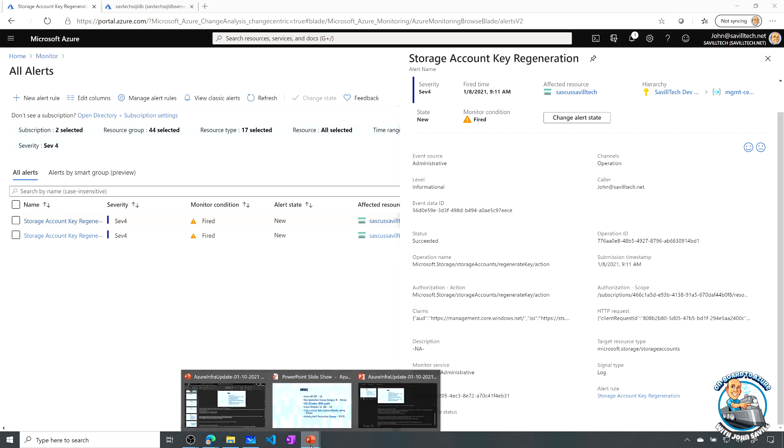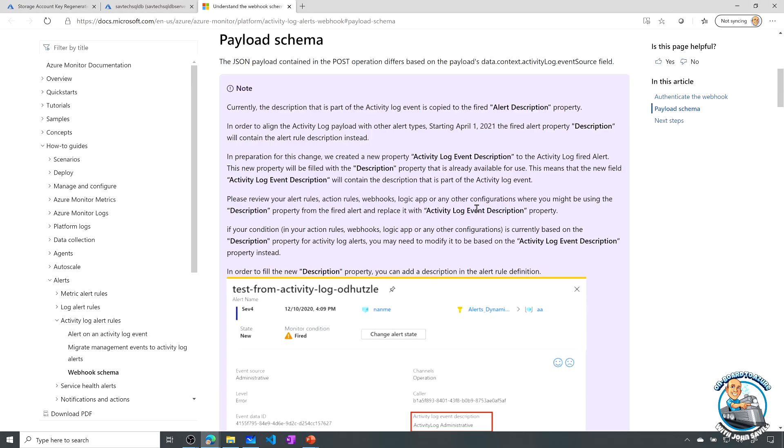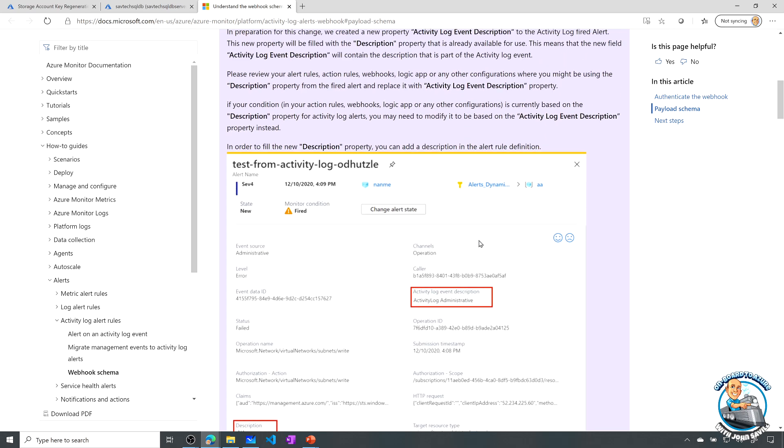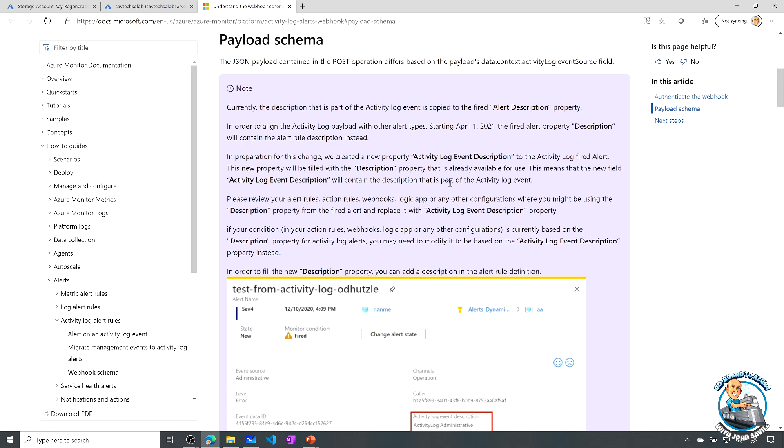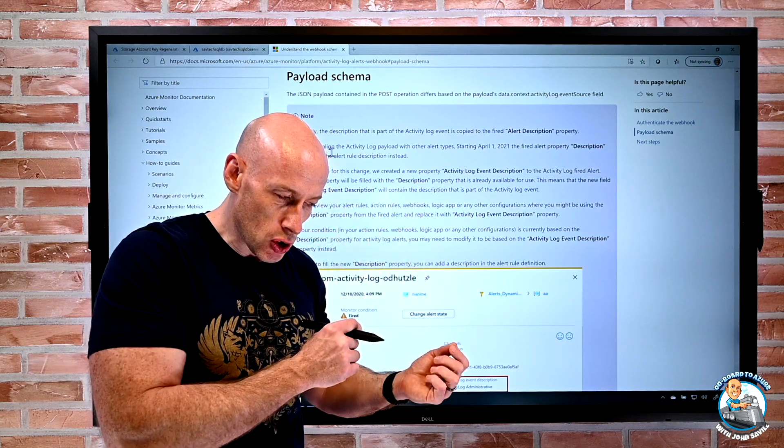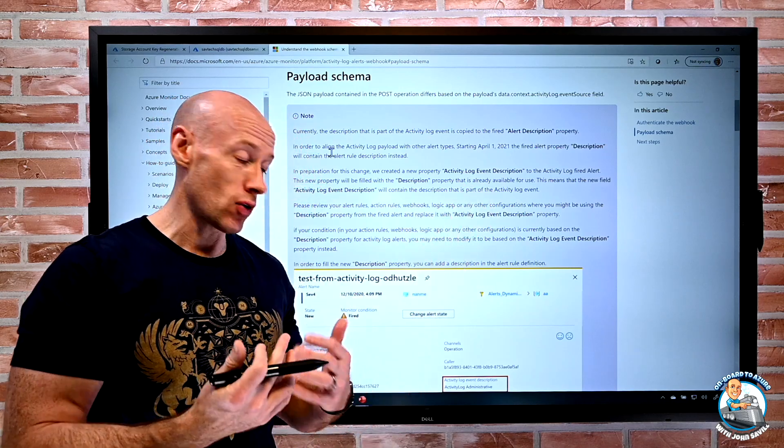So what's actually going to change, and I'll actually fire off because I did the link, if we look at what's coming, so here you're going to have this new activity log event description, and what the documentation is telling you here is, look, to make this consistent across all of the various types of alerts and the payload, there's going to be this new field activity log event description will contain the description from the actual activity log event, whereas the fired alert property description will contain the alert rule description. So basically, there's a change coming, and so if you're using that maybe as part of some logic, you're going to want to change your logic to instead of looking at description, you're going to go and look at this new activity log event description.